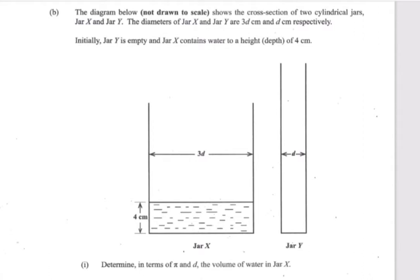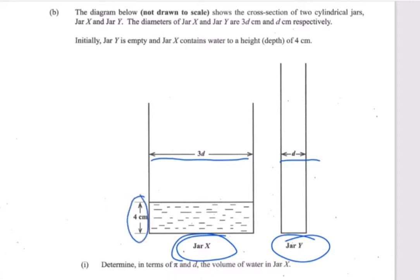So this is jar X and this is jar Y. They have given us the diameter of jar X which is 3d, and the diameter of jar Y which is d. They have also given us the height of the water in jar X. We can see the water up to that height. The cross section shows two cylindrical jars, so we know we're working with cylinders.